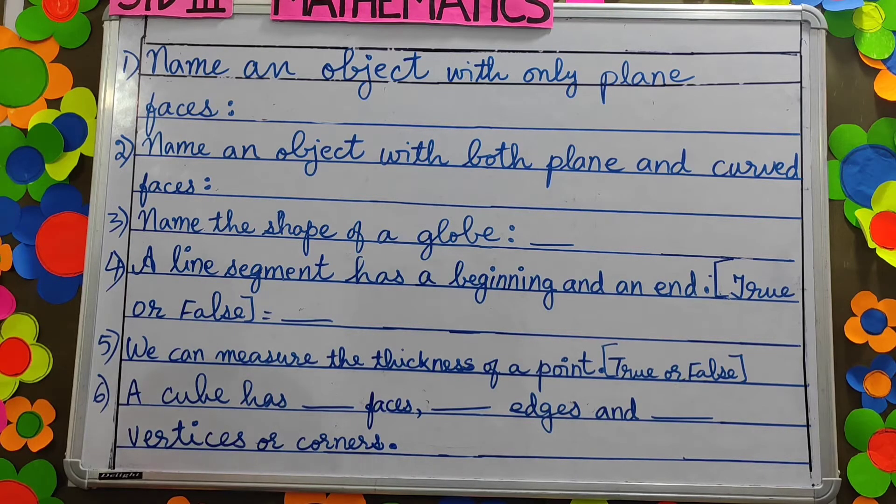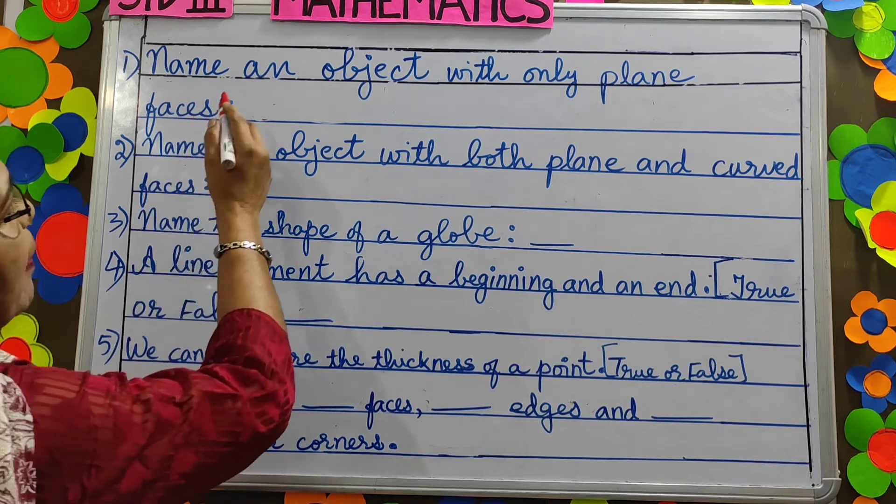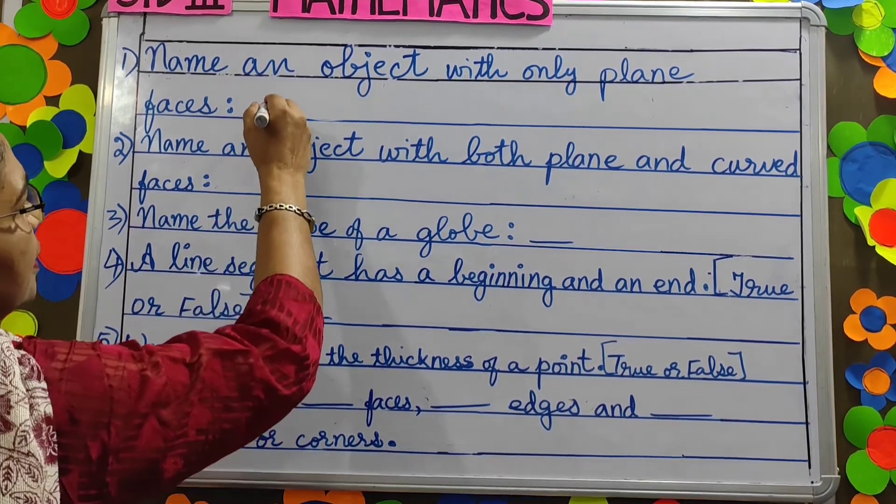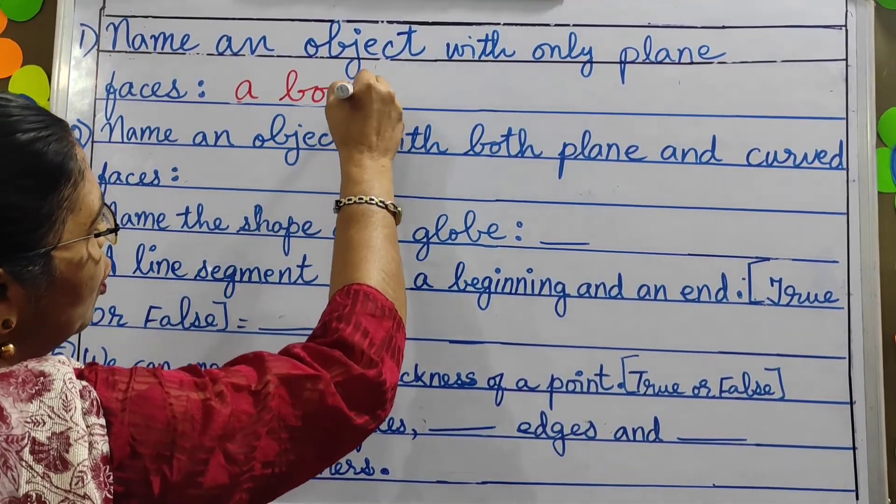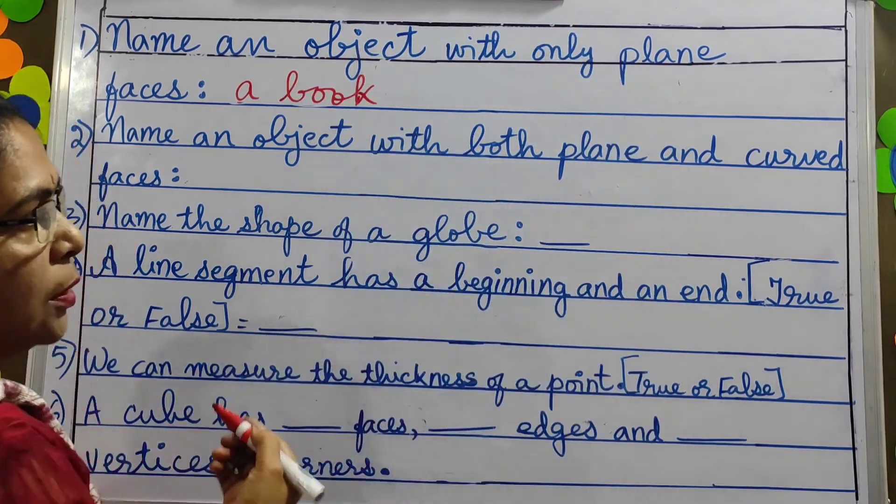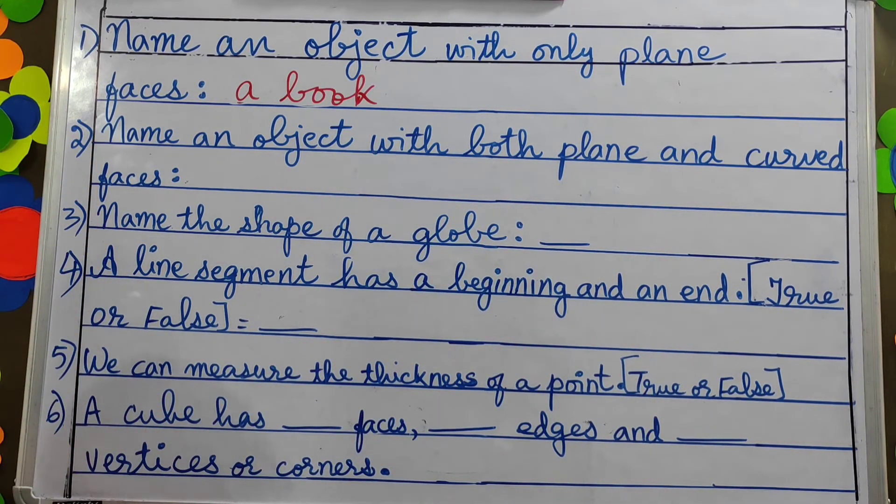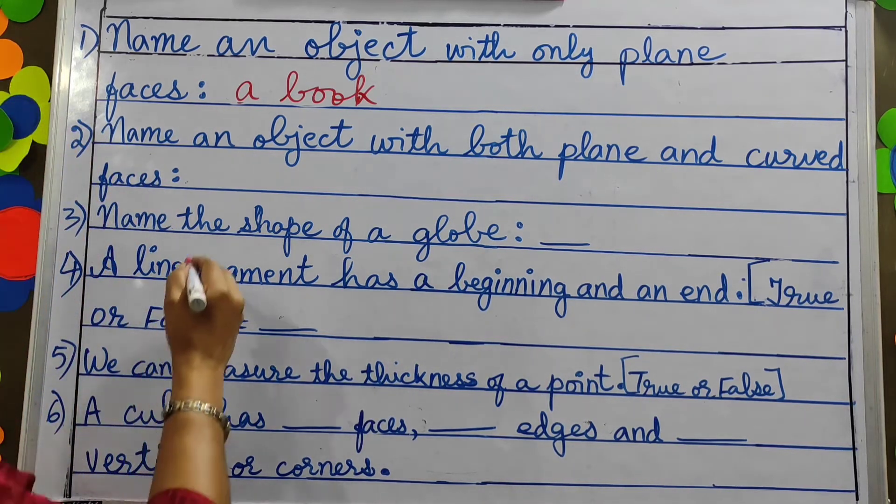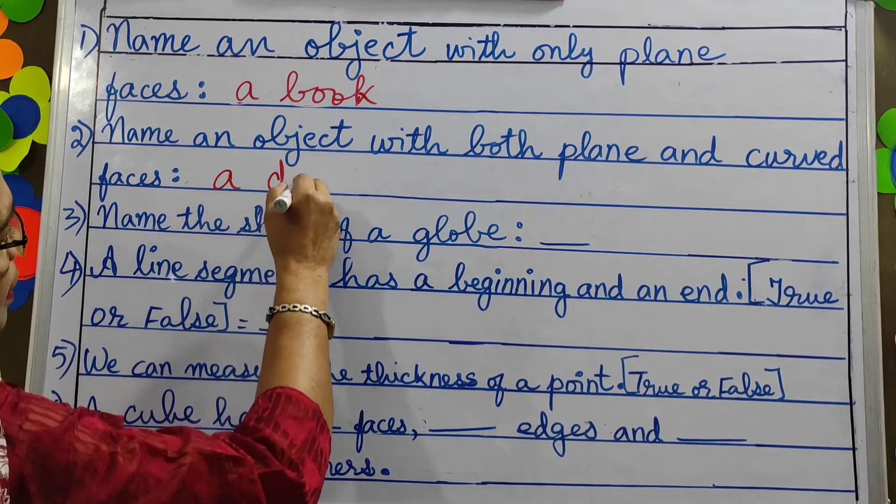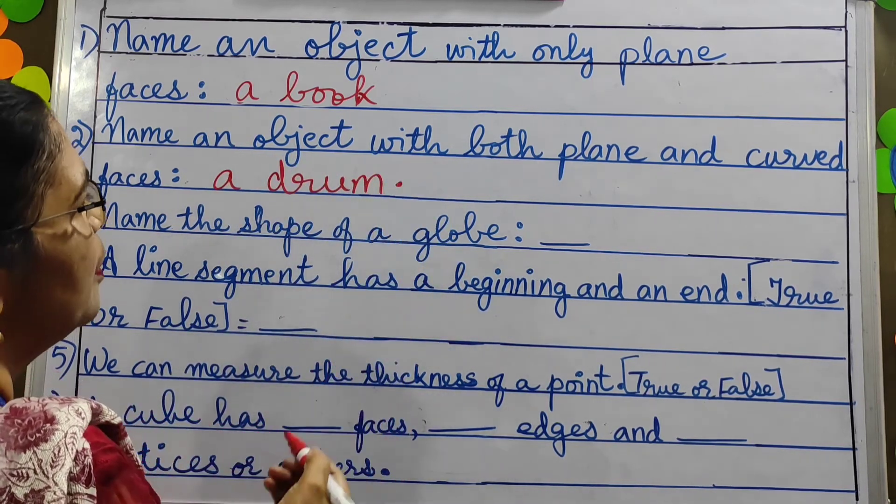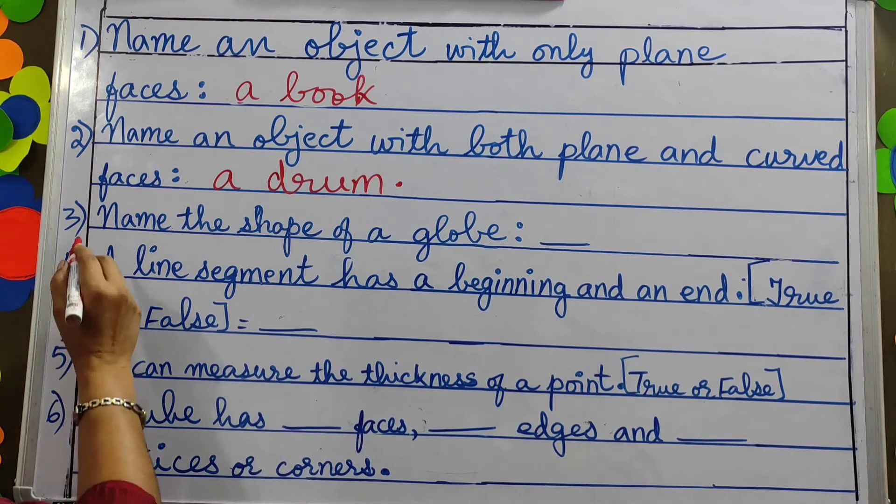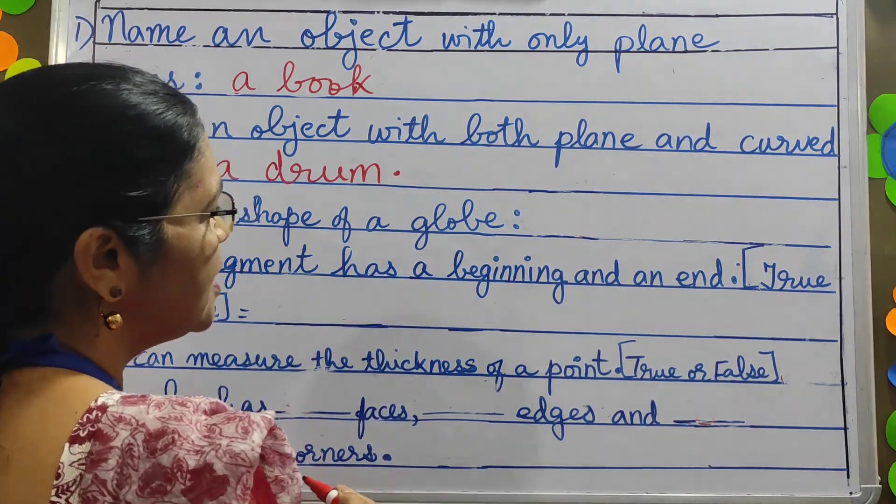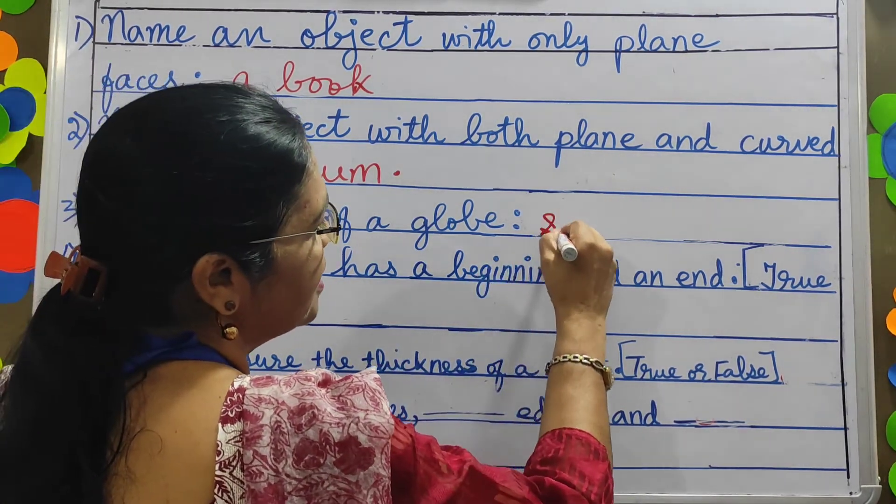Now children let's answer these questions. Name an object with only plain faces. Name children a book, a board. Number two, name an object with both plain and curved faces. A drum has plain and curved faces. Number three, name the shape of a globe. What is the shape of a globe children? Yes spherical.